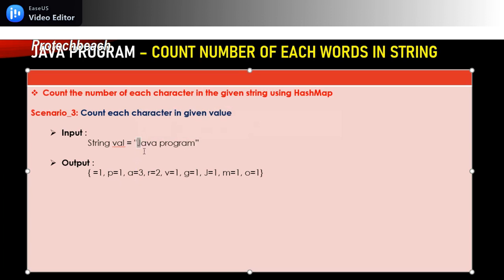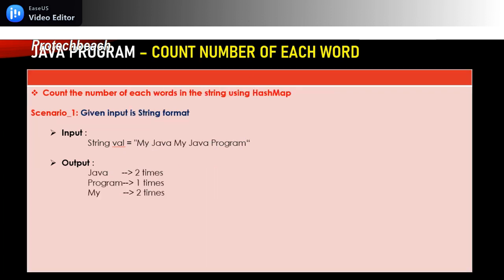Suppose if you take 'J', how many times is it repeated — only one time. How many times is 'a' repeated — three times in this given string. This is the expected output. So we need to write a program for counting the number of each word in the given string using the HashMap.